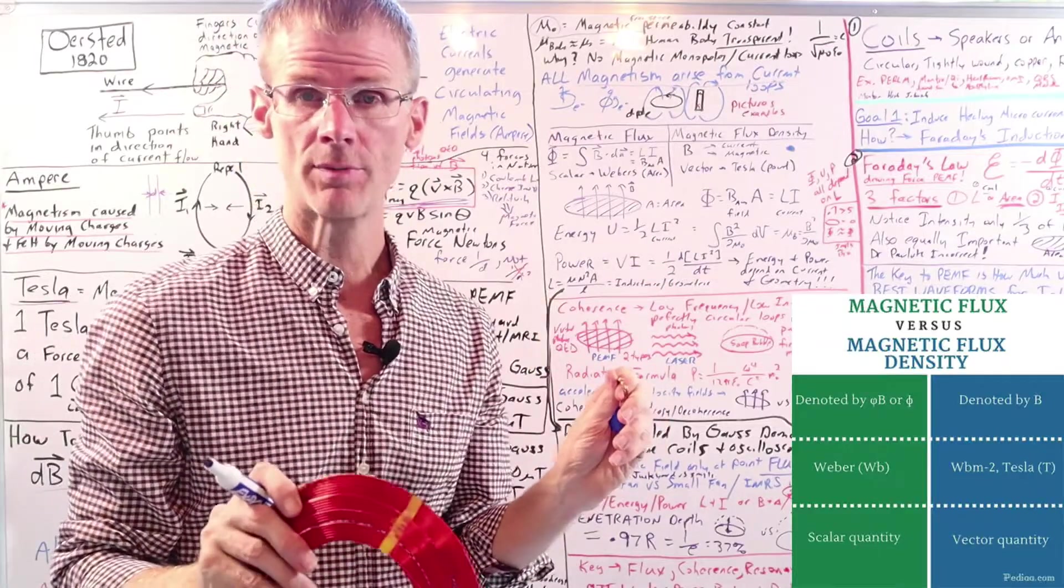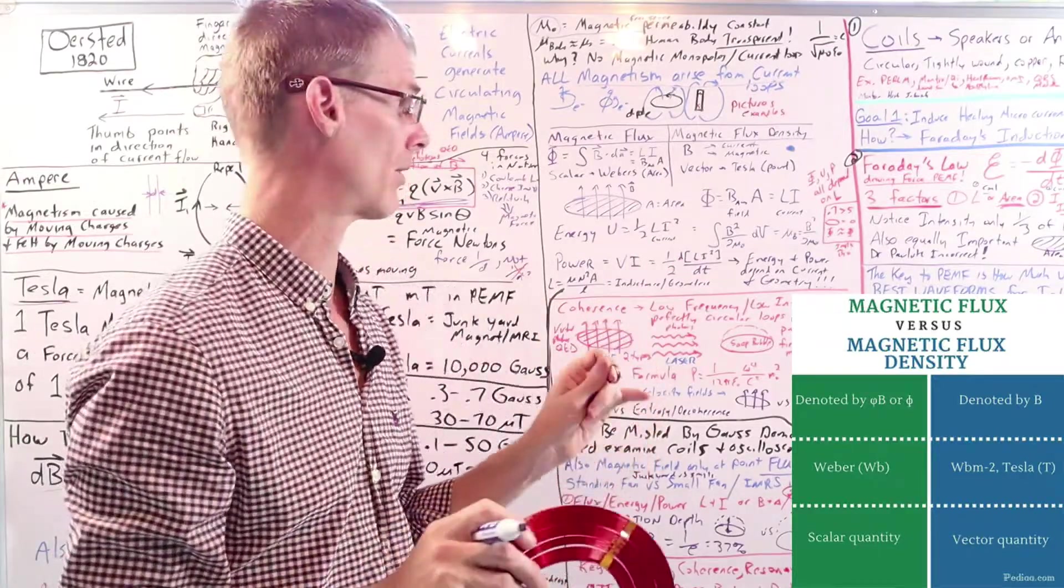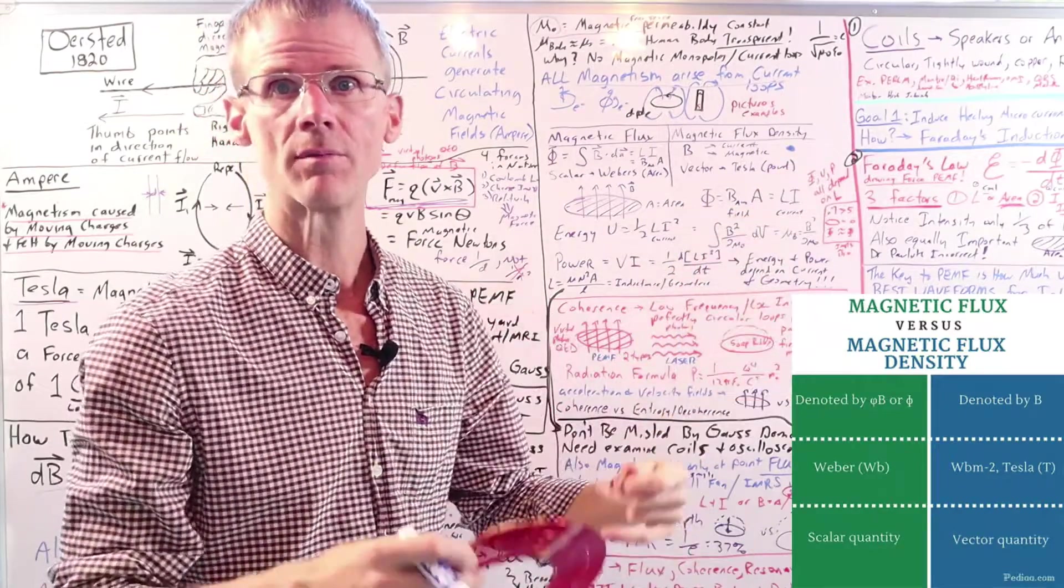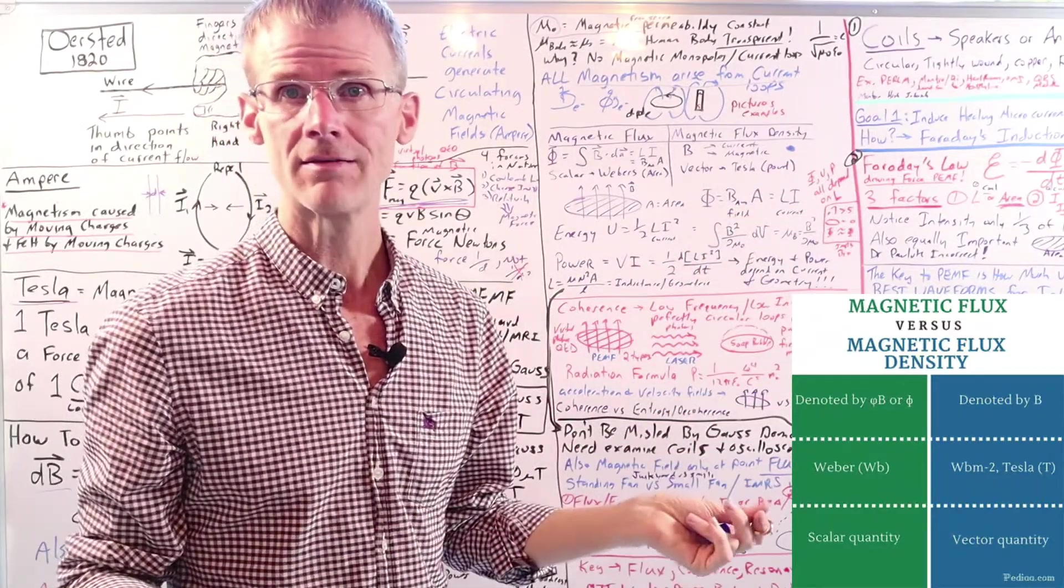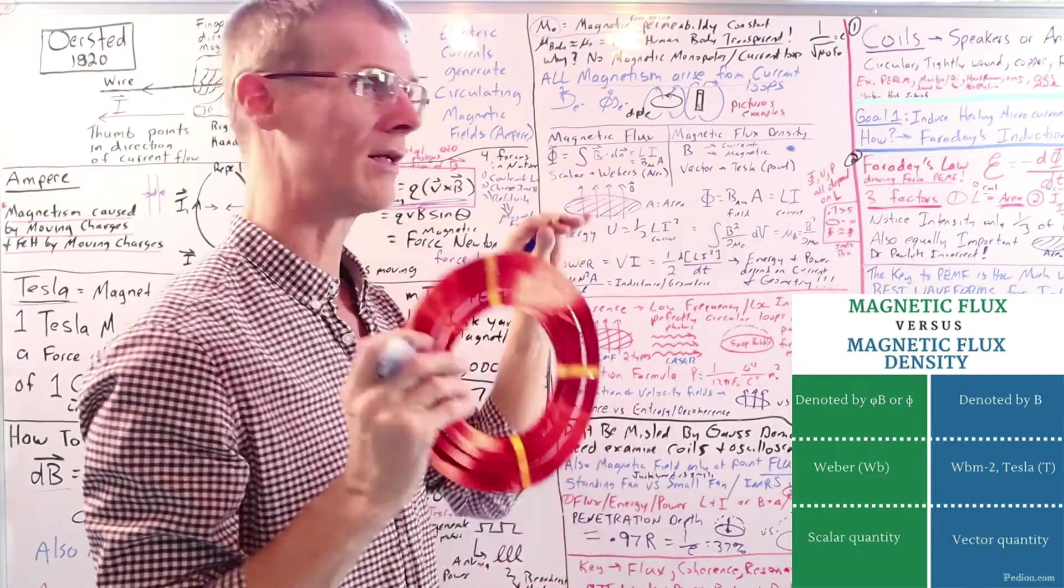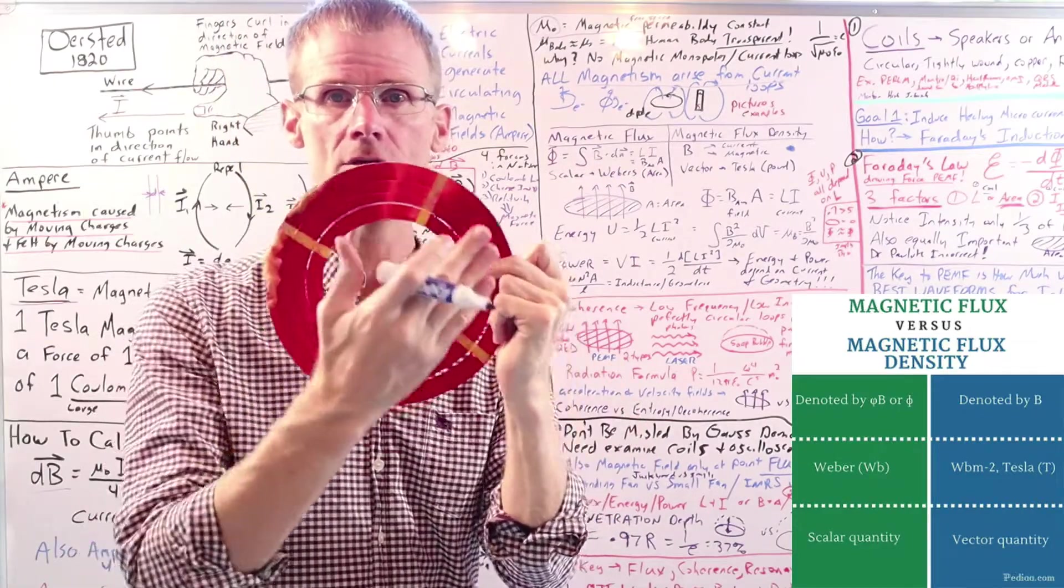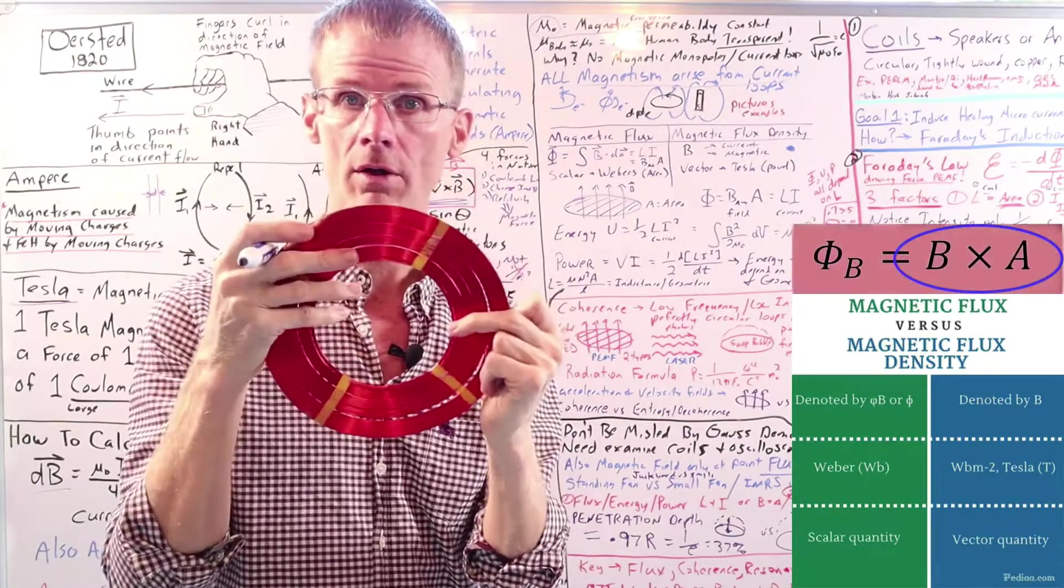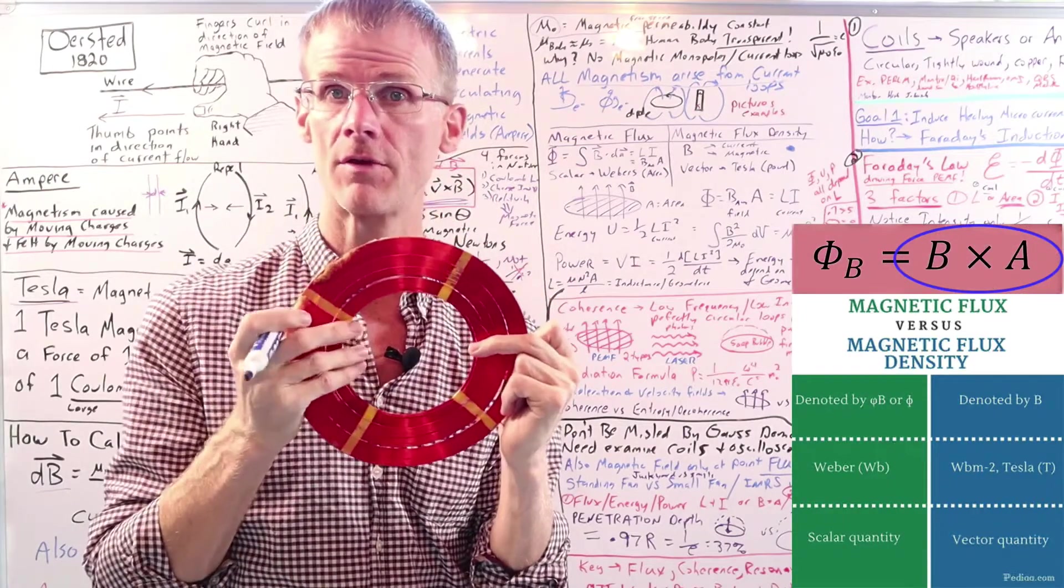But magnetic flux is what we really should be asking these companies and experts about because magnetic field strength is not what you want to know. The number of Gauss or millitesla or microtesla, that's not what you want. What you want to know is what is the flux? Meaning, and I'll just give you a basic idea how you can calculate flux. Flux is basically the area of a coil times the average intensity of the field.